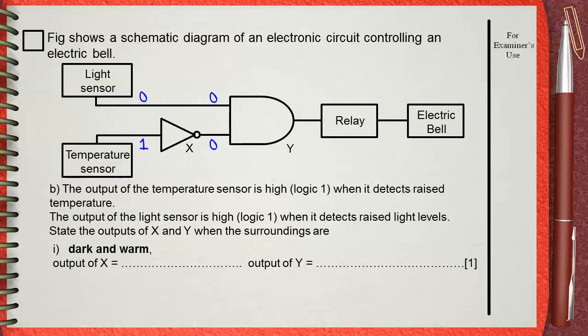When zero and zero are together the inputs of the AND gate, this AND gate will give an output of zero. The relay will not work, the electric bell is off.